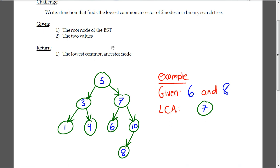Your return value will be a node which is the lowest common ancestor of the two nodes that you are given at the beginning. Let's look at an example here.